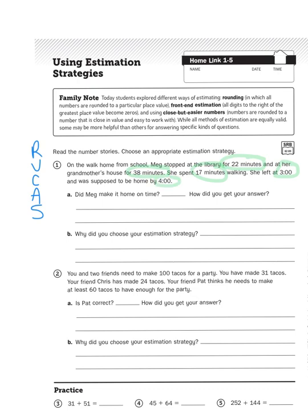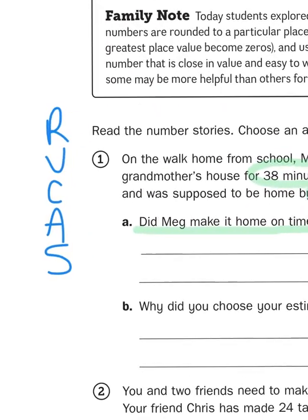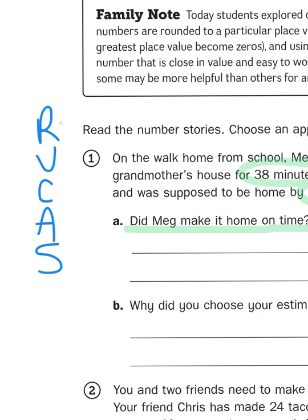So the question is, did Meg make it home on time? So let's check where we are in the problem. So I've read the problem twice. I've now underlined the question, and I've circled the important information. Now I need to come up with an action plan.